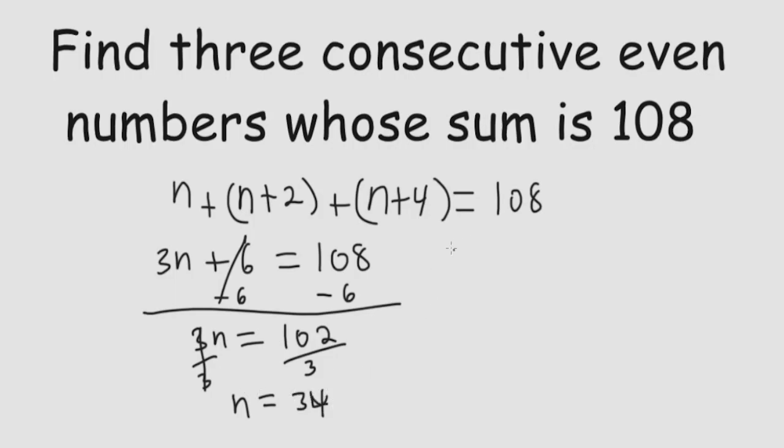So the first n is equal to 34. So the next two numbers would be, first we have 34, then we have 36, and we have 38.